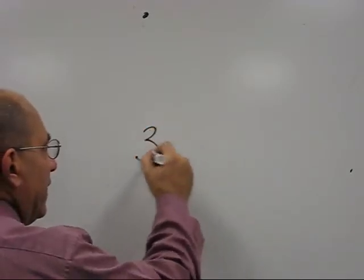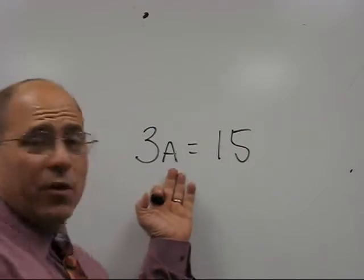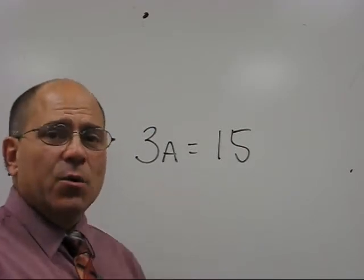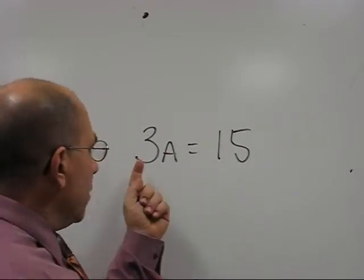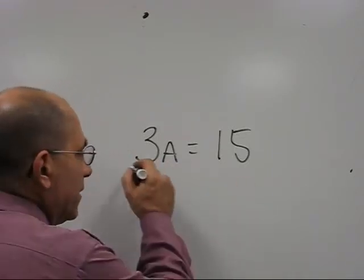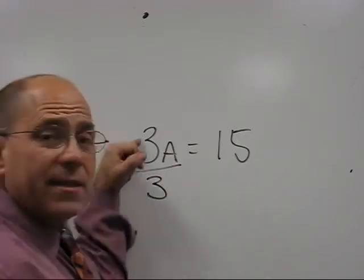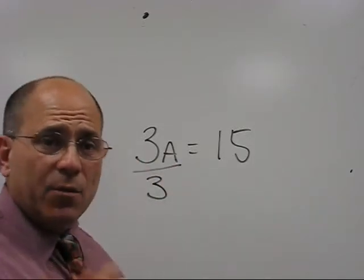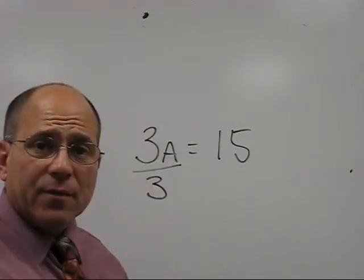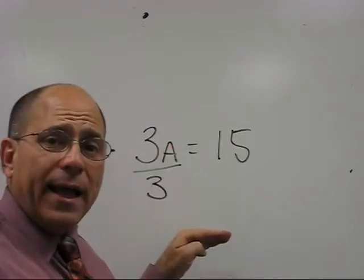If you said 3 times a equals 15, you probably know that a equals 5. The way we do that, though, is because we're multiplying 3 times a to equal 15, we divide 3 into itself. And the reason we do that is because by dividing any number by itself, it equals 1, which is what we want. We want it to equal 1a. So how we get it to equal 1a is we divide 3 into 3, and that equals 1a.